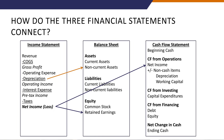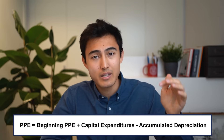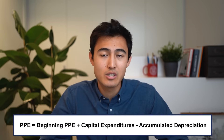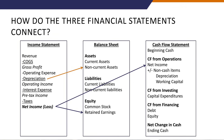Another link involves depreciation on the income statement, which connects to non-current assets on the balance sheet. Property, plant and equipment is calculated as beginning PPE plus capital expenditures minus accumulated depreciation, equaling ending PPE. Depreciation also links to the cash flow statement under operating cash flow, and PPE from the balance sheet links to investments in PPE on the cash flow statement.